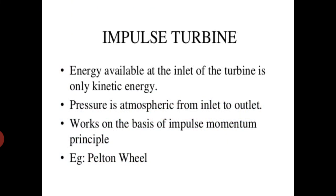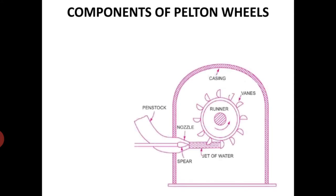The Pelton wheel turbine is generally called an impulse type of turbine. The reason for calling it an impulse turbine is that the energy available at the inlet of the turbine is only kinetic energy, pressure is atmospheric from inlet to outlet, and it works on the basis of the impulse momentum principle.